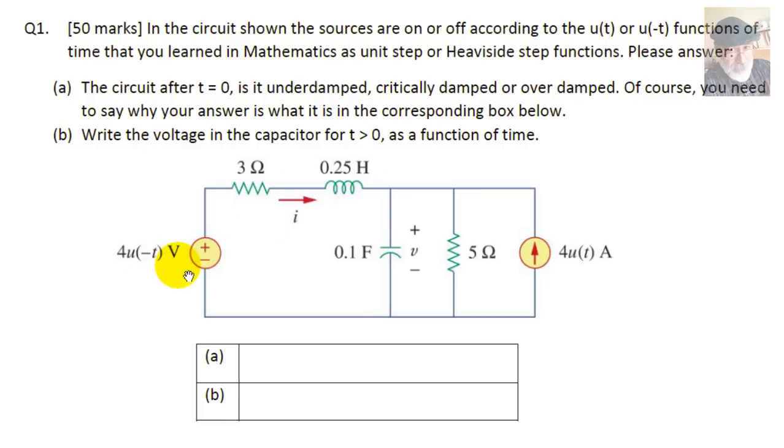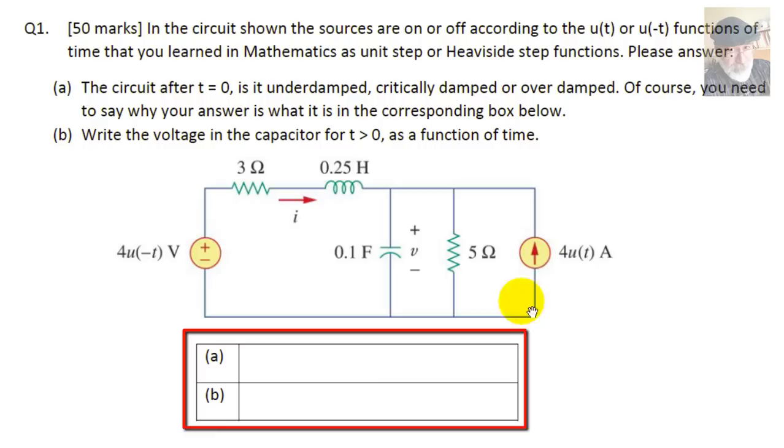These ones, check them out. The first question, A, was the circuit after t equals zero. The question, is it underdamped, critically damped, or overdamped? Of course, you need to say why your answer is what it is in the corresponding box below. Part B, write the voltage in the capacitor for t greater than zero as a function of time. You're provided with those two boxes because, as usual, this exam is graded by final answer only.